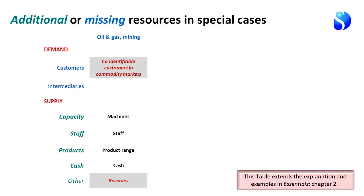In the oil and gas industry and mining industry — natural resource businesses generally — it is often the case that you have no identifiable customers. You ship your ore or oil and gas to some market where it gets traded. You don't have a relationship with specific customers. This case also brings up an additional kind of resource that's critical: the reserves that the oil or mining company has. So we need information about those reserves, and generally we do have it.